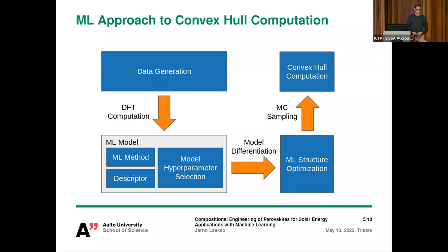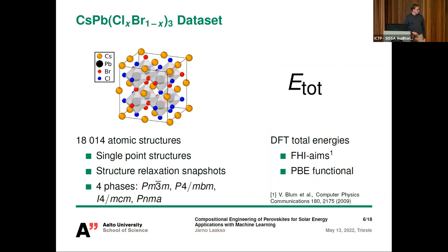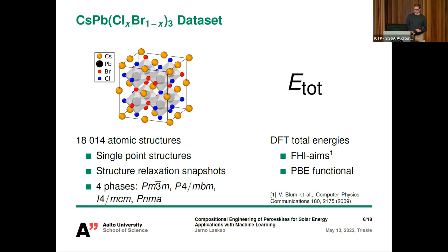We generate a dataset of about 18,000 atomic structures. We included both single-point structures generated algorithmically and structure snapshots from DFT relaxations. To increase diversity, we included four different lattice phases: Pm3m, P4mbm, I4mcm, and Pnma. For all 18,000 atomic structures we calculated DFT total energies using FHI-aims with PBE functionals.